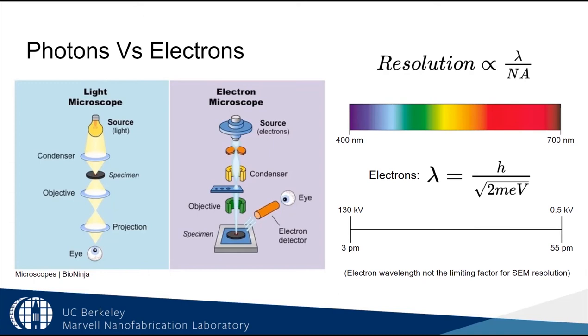In contrast, the wavelength of an electron is a function of its energy. In an SEM, that means the wavelength depends on the accelerating voltage. In the nanolab, we can accelerate electrons between half a kilovolt and 130 kilovolts. That means that the electron wavelengths range from 3 picometers to 55 picometers. In theory, that means we could image individual atoms. Sadly, that's not the limiting factor for SEM resolution.